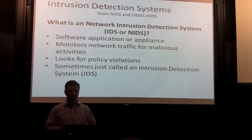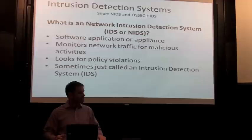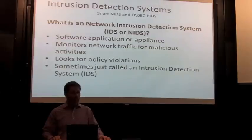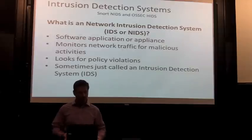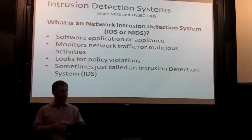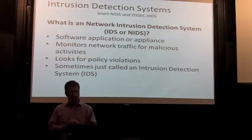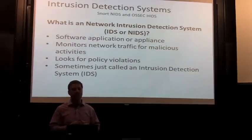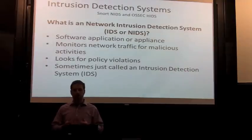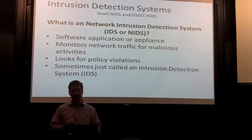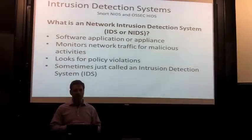So what is a network intrusion detection system? Wikipedia defines an IDS as a software application or appliance that monitors network traffic for malicious activities and looks for policy violations — sometimes called an IDS or NIDS. The two key phrases are malicious activities, like port scans and virus activity, and policy violations, such as the Massachusetts state law prohibiting sending social security numbers via unencrypted email, or employees using Dropbox to store sensitive financial files.